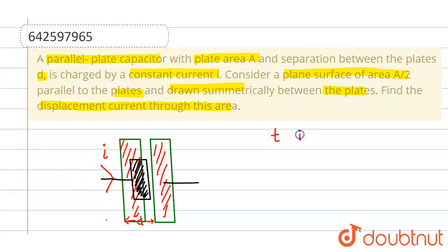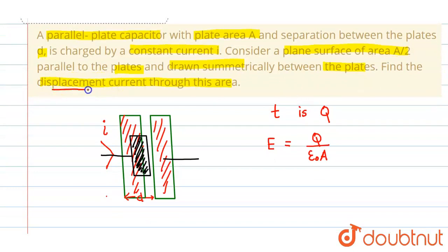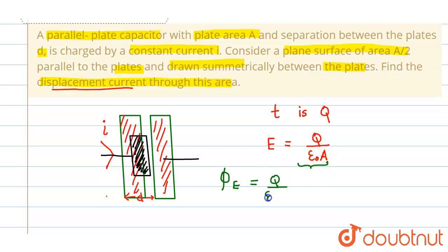Let the charge on the capacitor at time t be q. The electric field between the plates is given by E = q divided by epsilon naught times A. Now we need the flux to find the displacement current. The electric flux phi_e equals electric field times area, so phi_e = (q / epsilon_naught * A) times (A/2), since we are considering area A by 2. The A's cancel, giving flux as q divided by 2 epsilon naught.